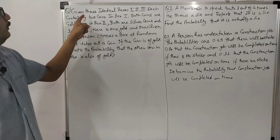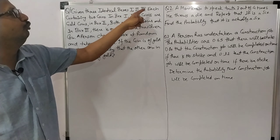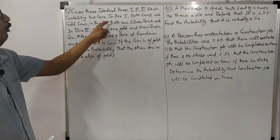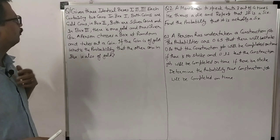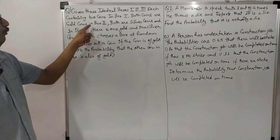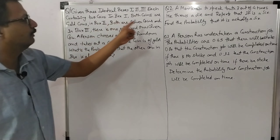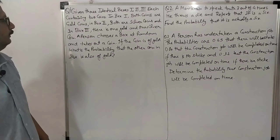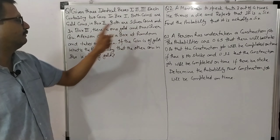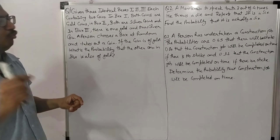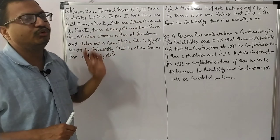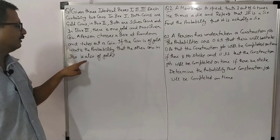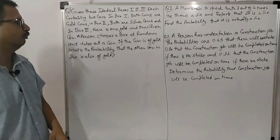Given that 3 identical boxes 1, 2, and 3, each containing 2 coins. In box 1 both coins are gold. In box 2 both are silver coins, and in box 3 there is 1 gold and 1 silver coin. A person chooses a box at random and takes out a coin. If the coin is gold, what is the probability that the other coin in the box is also gold?